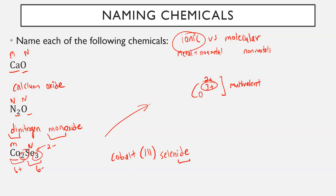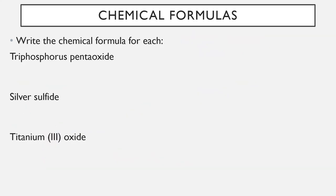If this is still tricky, there are other videos on Google Classroom with ionic and molecular compound naming and formula practice — go back and watch those. Now for writing formulas from names: triphosphorus pentaoxide. Seeing the prefixes tri and penta right away tells me this is a molecular compound. Tri means three and penta means five, so I have three phosphorus and five oxygen. Phosphorus is just P, so the formula is P3O5. Molecular compounds are pretty nice when going from name to formula.